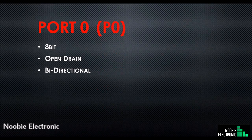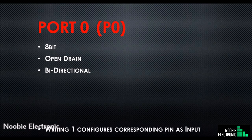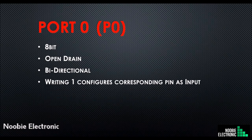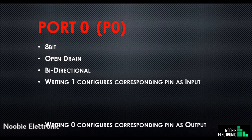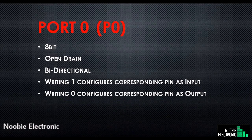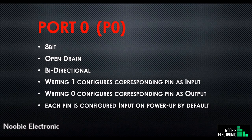The P0 register is used for accessing port 0. This register is bit accessible, which means we can access individual bits of that register. Writing 1 to some bit of the P0 register will configure the corresponding pin as input, while writing 0 will configure it as output. By default, every pin is configured as input on powerup.